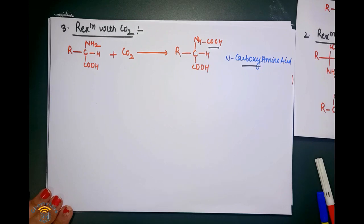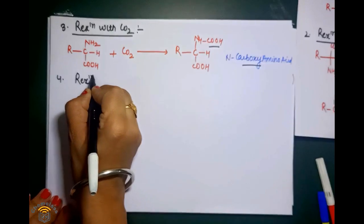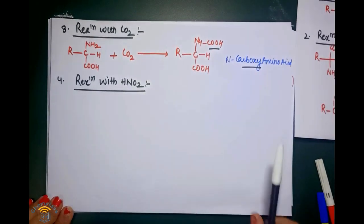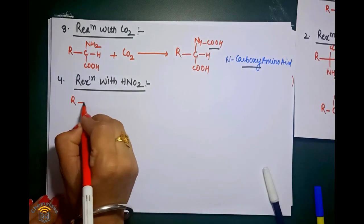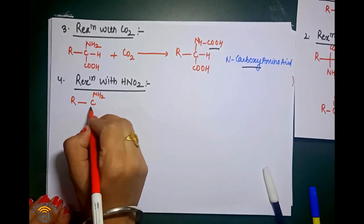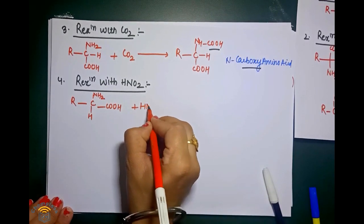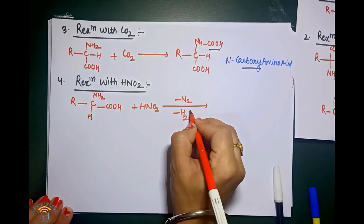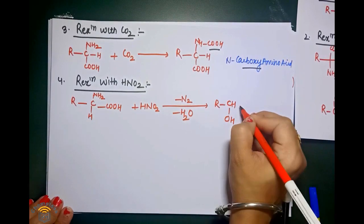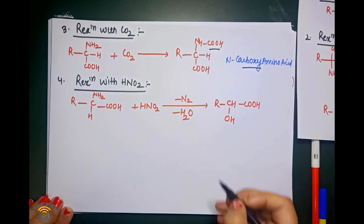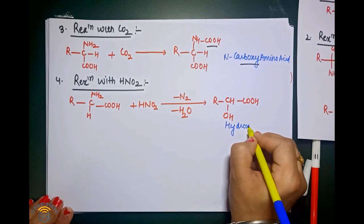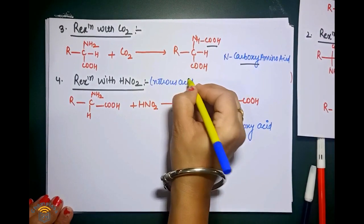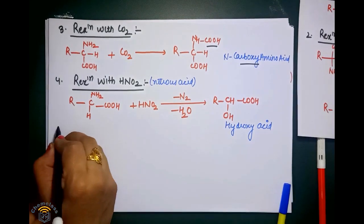The next reaction is the reaction with nitrous acid (HNO2). You take amino acid reacting with HNO2. With loss of N2 and water, we are getting R-CH(OH)-COOH. So we are getting a hydroxy acid. With nitrous acid, amino acid gives us a hydroxy acid.